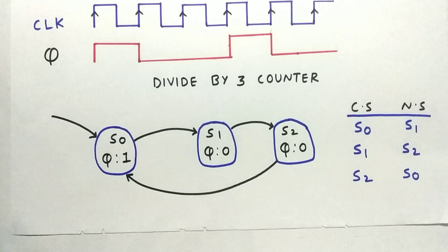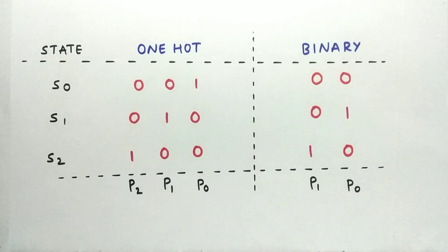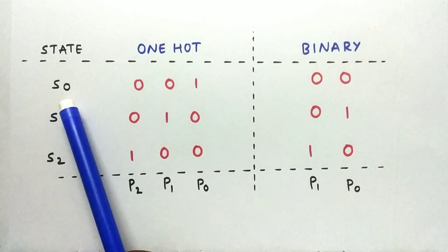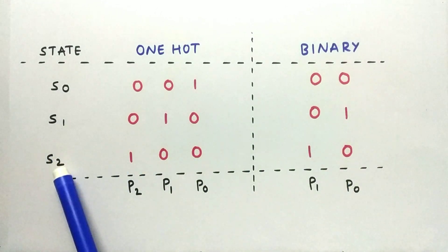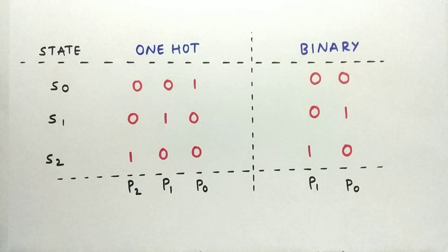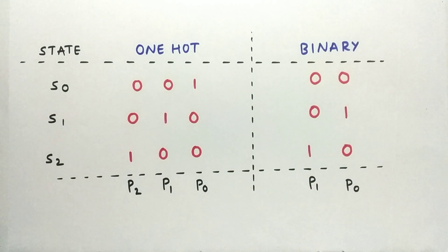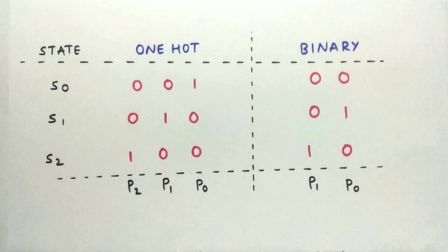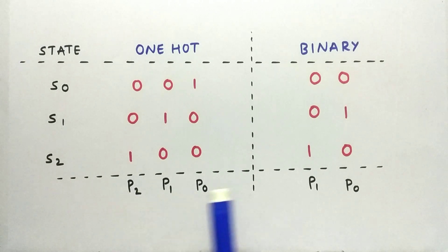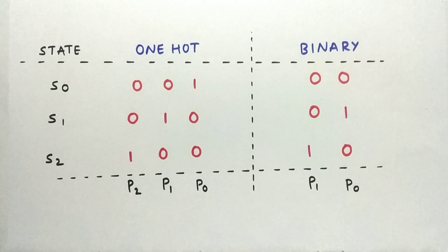Now let's represent the states in binary and in one-hot encoding. Binary encoding uses two bits to represent a state: S0 is represented as 00, S1 as 01, and S2 as 10. With two bits we can have four combinations, so binary requires only two bits. In one-hot encoding, we require one state variable per state, so since we have three states we need three variables: P0, P1, and P2, whereas in binary we only need P0 and P1.